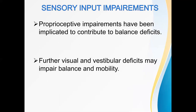Then we come to sensory input impairments. Proprioceptive impairments have been found to contribute to balance deficits. Decreased joint position sense has been reported in individuals with recurrent ankle sprains. Then somatosensory, visual, and vestibular deficits may impair balance and mobility. Any visual loss caused by disease or trauma will impair balance and lead to falls. Individuals with damage to the vestibular system due to viral infections, TBI, or aging may experience vertigo and postural instability.